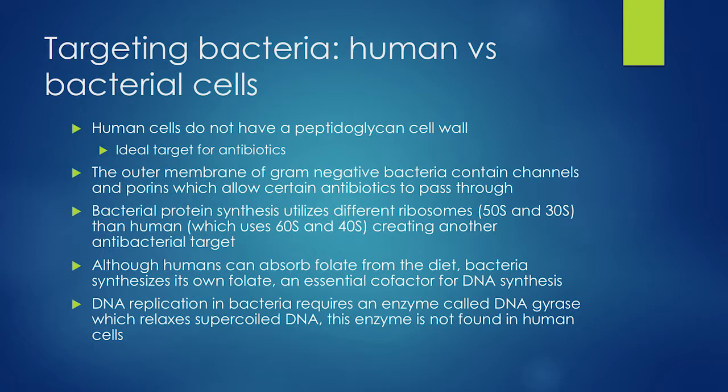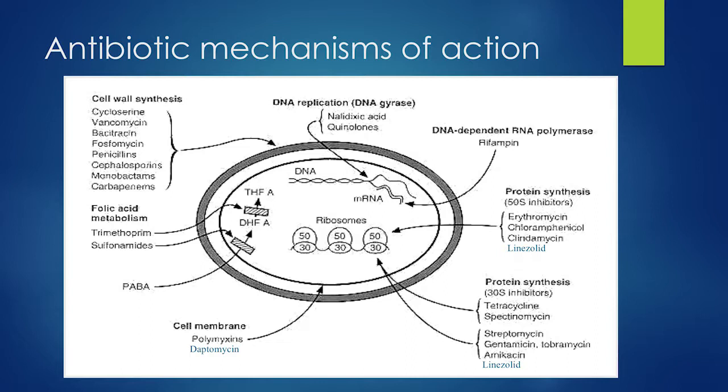Humans do not make our own folate — we absorb it from the diet — whereas bacteria synthesize their own folate. So folic acid metabolism is another target we can use. DNA replication in bacteria is also a little different, and bacteria have different enzymes such as DNA gyrase.